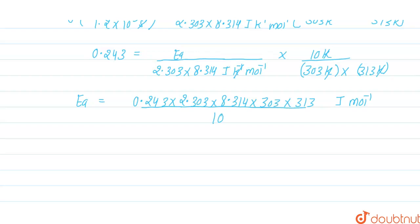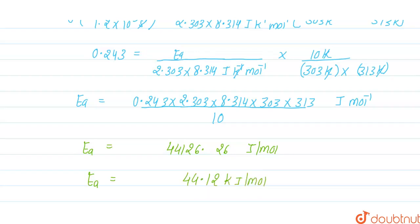Calculating: Ea = 0.243 × 2.303 × 8.314 × 303 × 313 / 10 = 44,126.26 J mol⁻¹. Converting to kilojoules by dividing by 1000, the activation energy Ea = 44.12 kJ mol⁻¹.